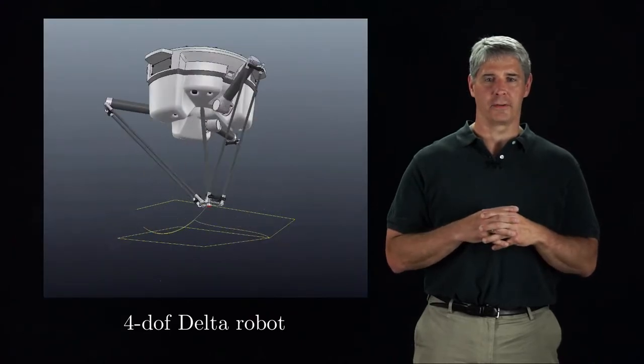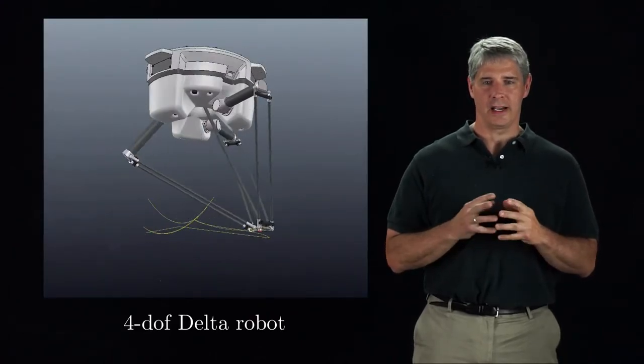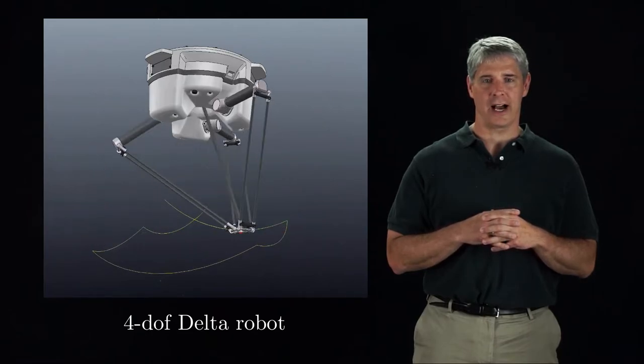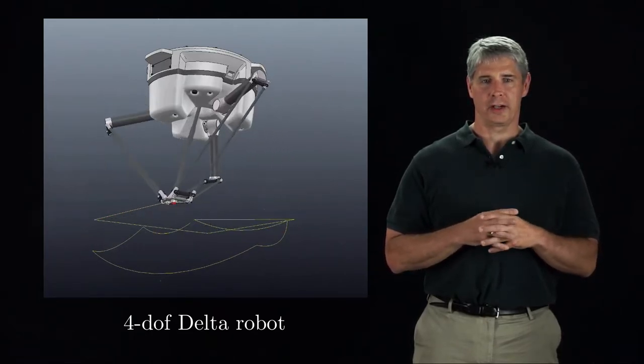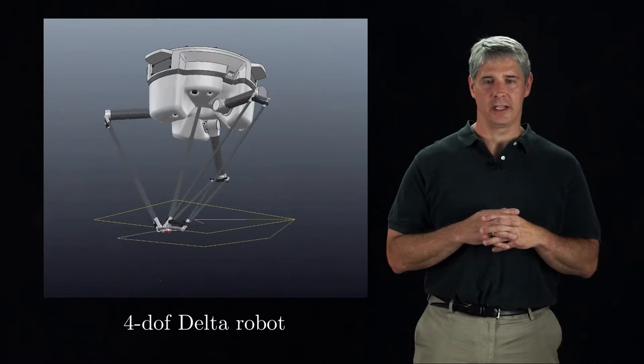The next example is a 4 degree of freedom delta robot. The end effector moves in X, Y, and Z, and it rotates about a vertical axis. There are also 3 degree of freedom delta robots that eliminate the rotational motion.